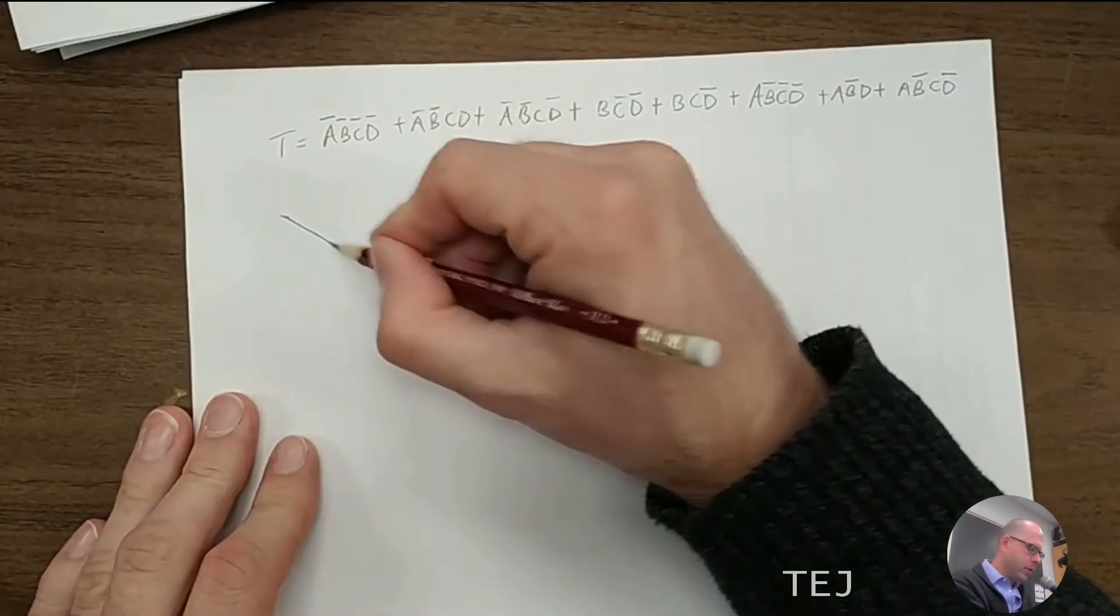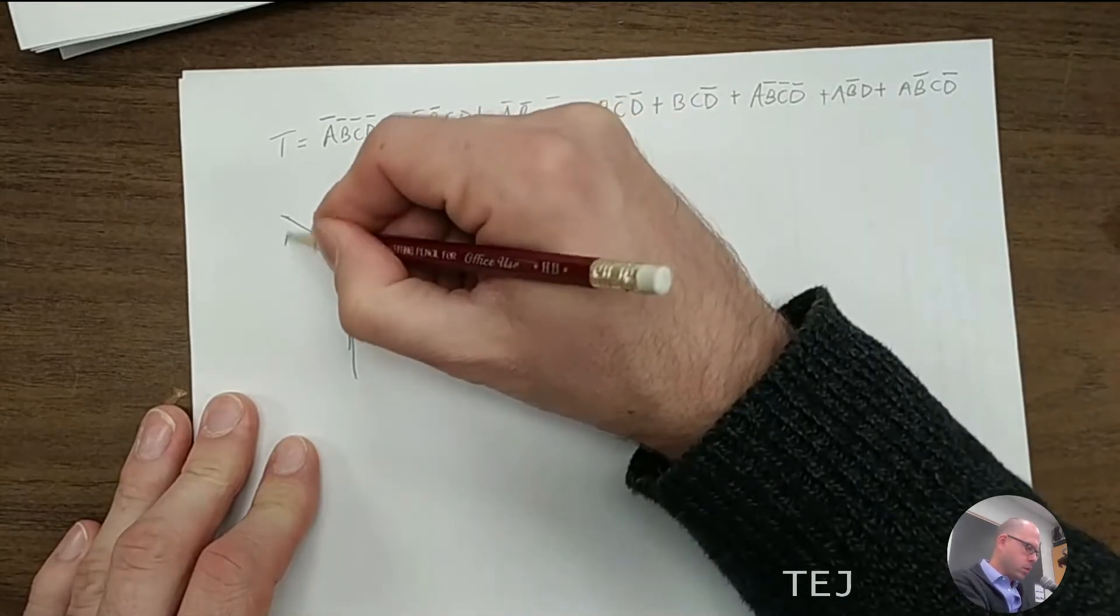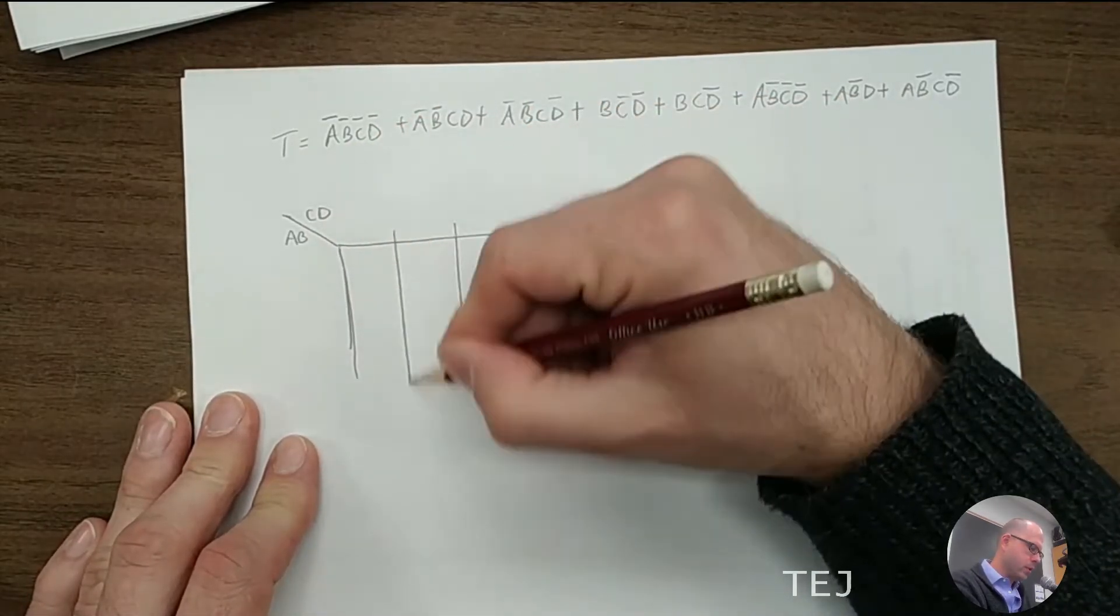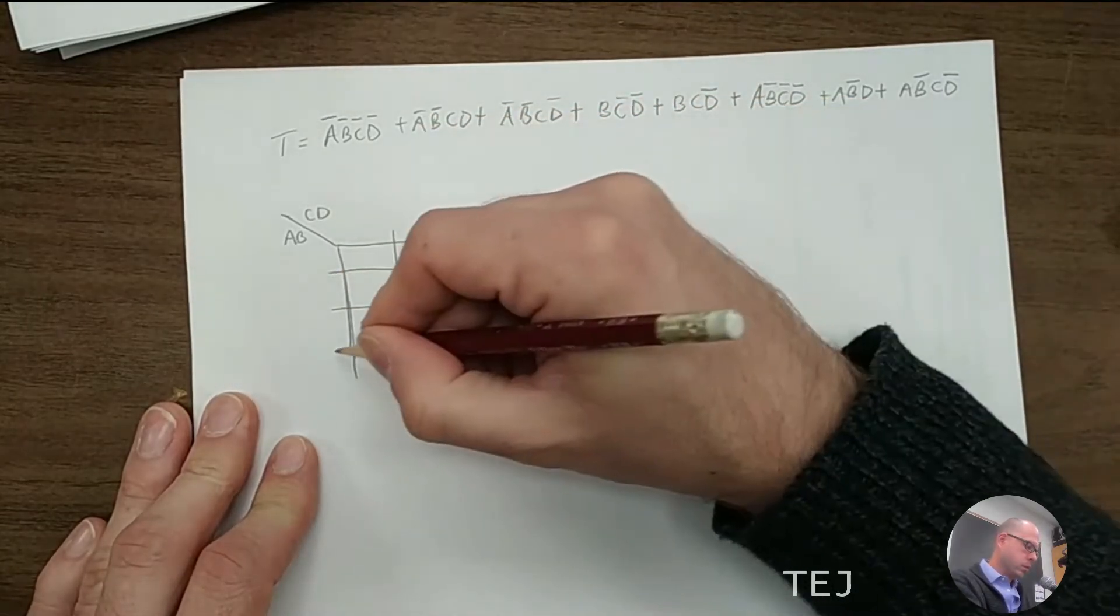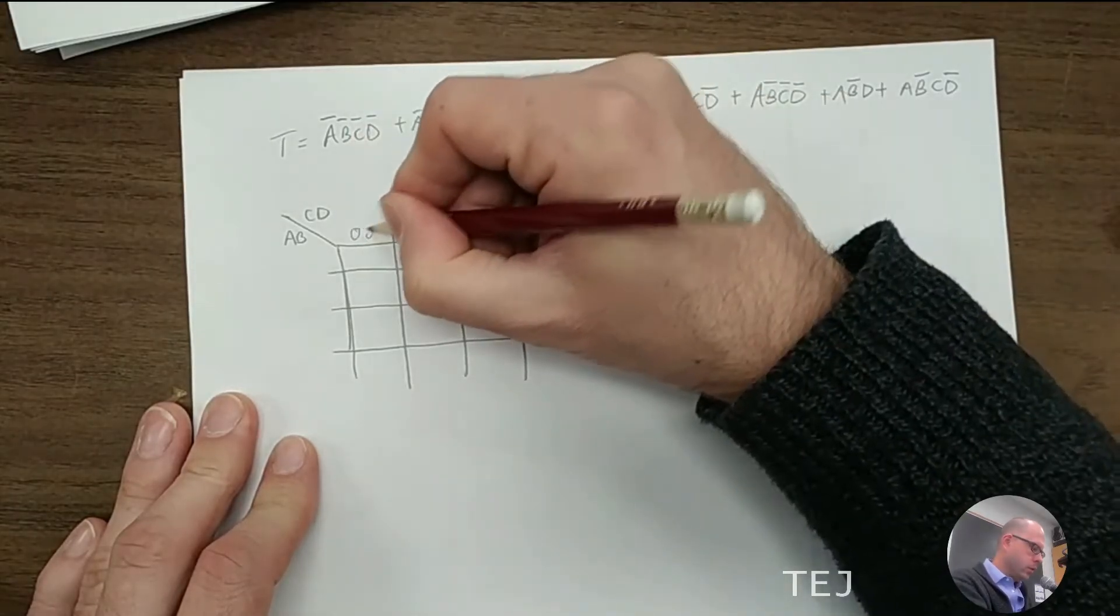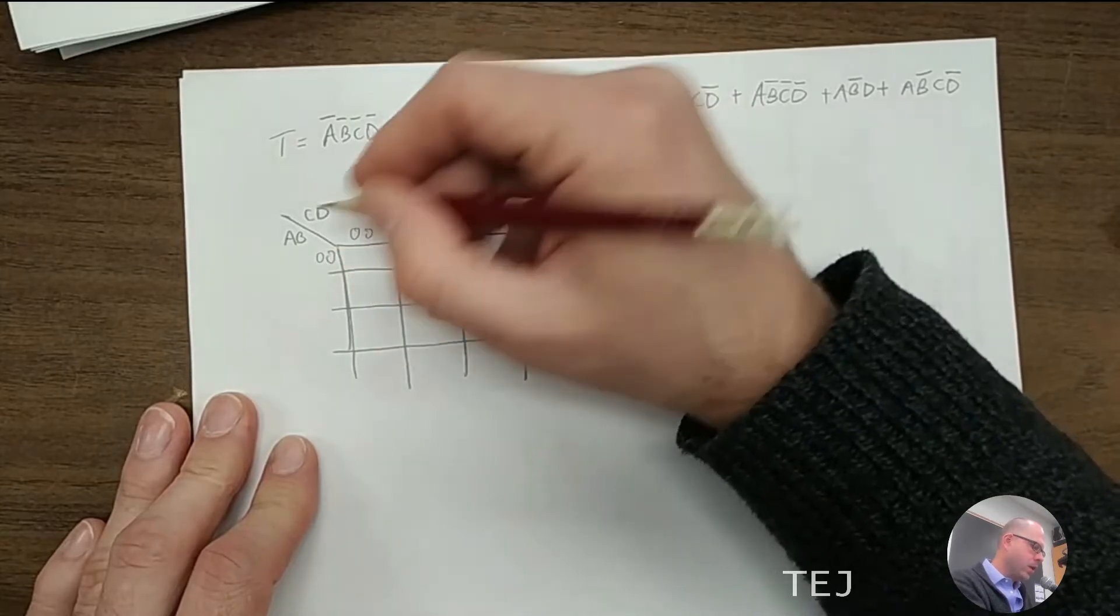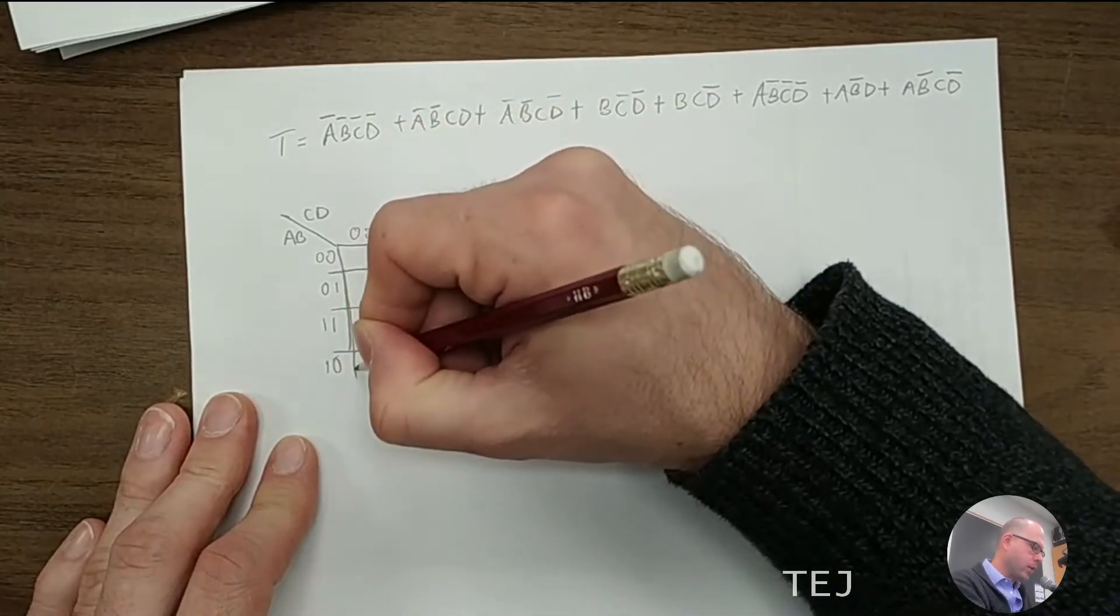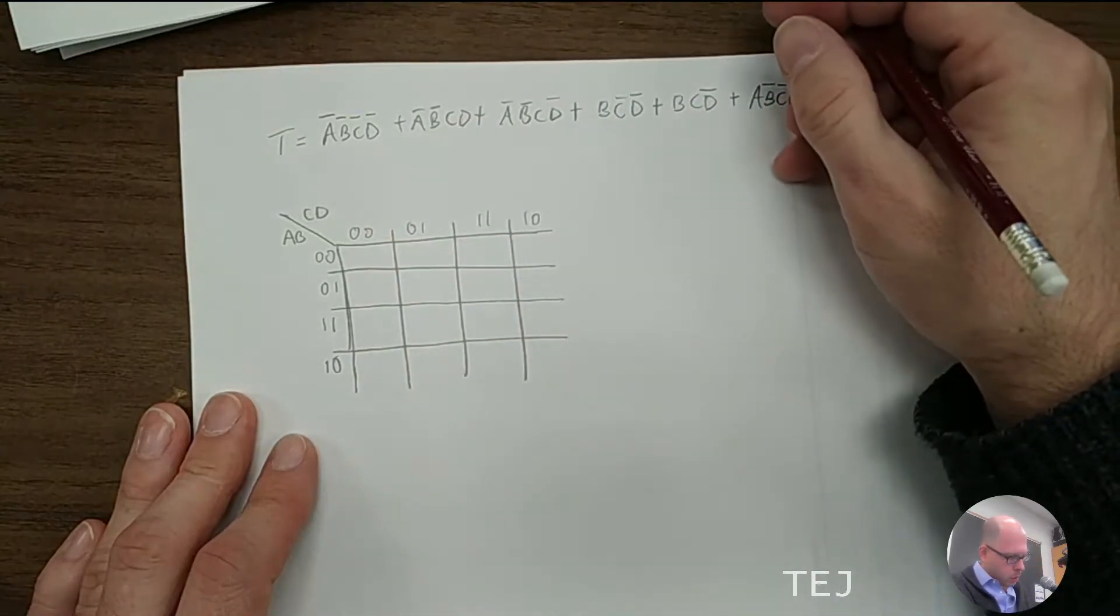So setting up the table. It's the same as before, really. They're all the same, right? The tables are always the same. And you can use a ruler to make it neater. Zero, zero, zero, one, one, one, one, zero. It's gray encoding. I've heard it called gray codes before, but gray encoding, I think, is the official term.